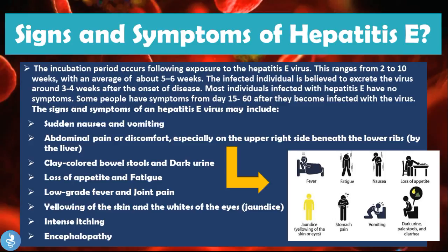Signs and symptoms, if present, may include sudden nausea and vomiting, abdominal pain or discomfort especially in the right upper side beneath the lower ribs where the liver is located, clay-colored bowel stools, dark urine, loss of appetite and fatigue, a low-grade fever and joint pain, yellowing of the skin and the whites of the eyes — a process called jaundice — and intense itching or encephalopathy.